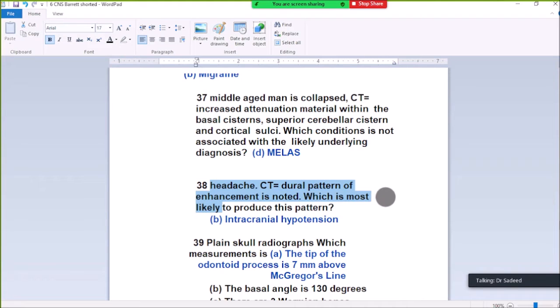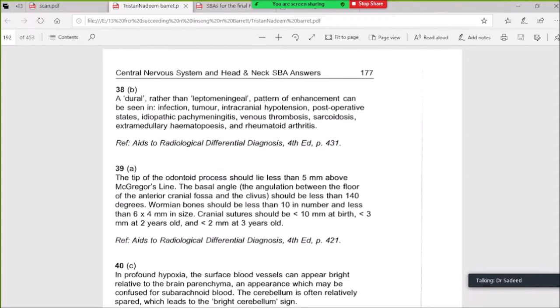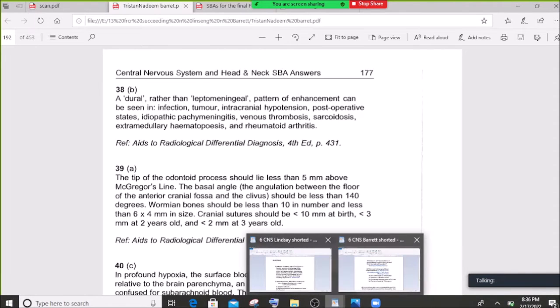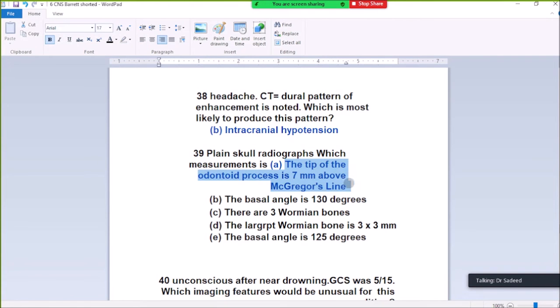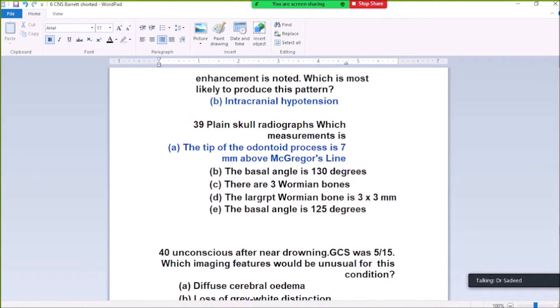Question 38. Headache with CT showing dural pattern of enhancement noted. Which is most likely to produce this pattern? Intracranial hypotension. Question 39. On the plain skull radiograph, which measurement is correct? The tip of the odontoid process is 10 mm above McGregor's line. This is abnormal. Normally the tip of the odontoid process should be less than 5 mm above McGregor's line.